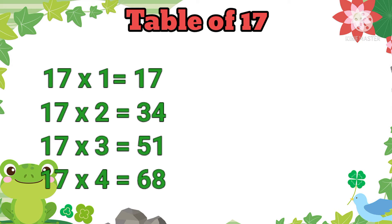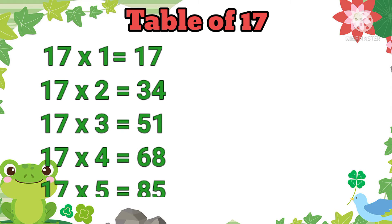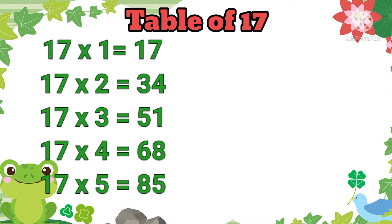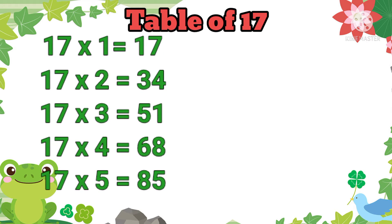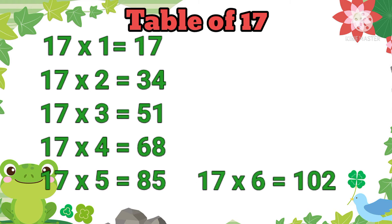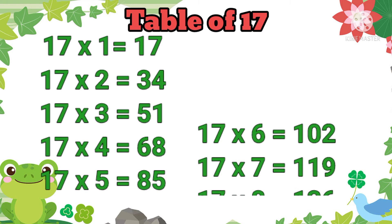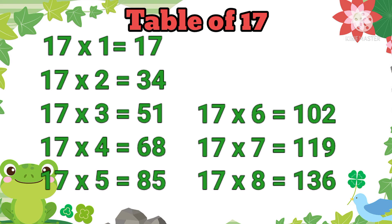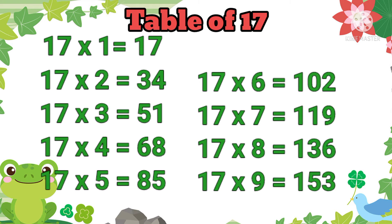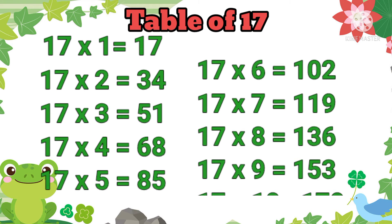17 ones are 17. 17 twos are 34. 17 threes are 51. 17 fours are 68. 17 fives are 85. 17 sixes are 102.